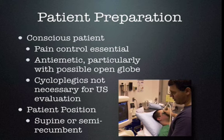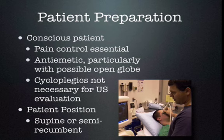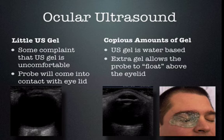Some people wonder how to do this on a patient. The patient is going to be conscious, so pain control is essential. Some eye pathology is quite painful, so if the patient is in pain, it's hard to get a good exam. If they're having vomiting, giving them an antiemetic would be particularly useful. Cycloplegics are not necessary for the ultrasound evaluation of the eye — we image through the closed eyelids, so the iris itself is not a problem. For patient position, I prefer supine or semi-recumbent as the gel stays in the orbital cavity better.